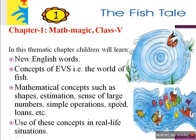Sense of large number means some people go and catch fish and then sell it. The amount they earn may be less, may be more, may be very high. So you will get the sense of large numbers. Simple operations are like mathematics — addition, subtraction, multiplication and division.